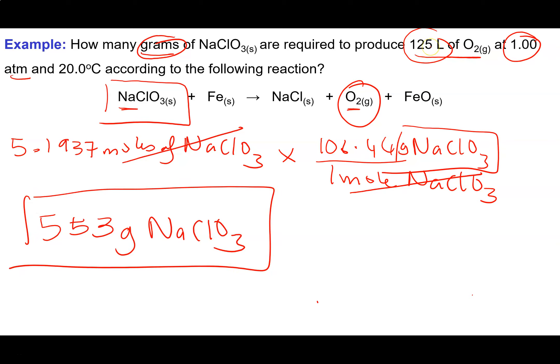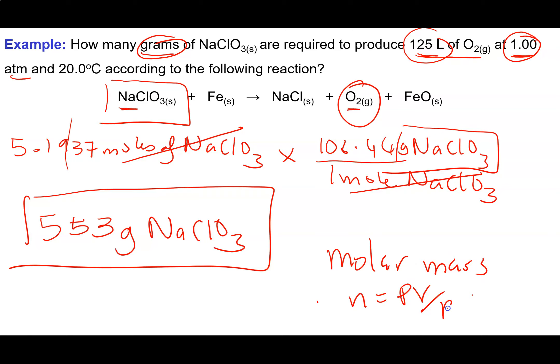I'm only doing multiplication here, so I carried through a few extra digits and gave my final answer to three significant figures at the very end. At every point I carried one or two extra digits to avoid rounding error. Pretty simple — we used molar mass and N = PV/RT.